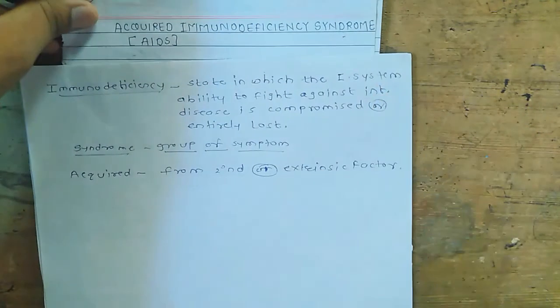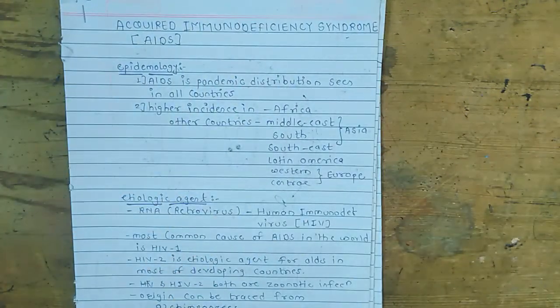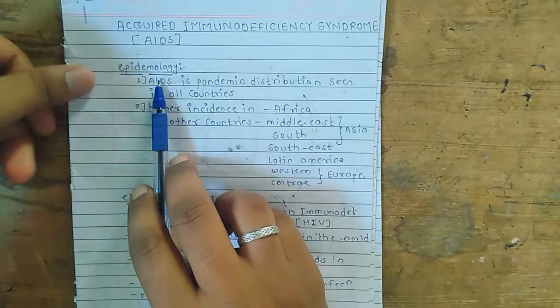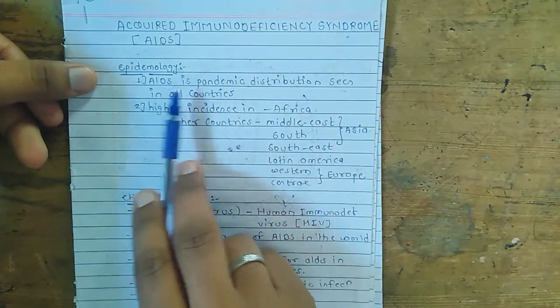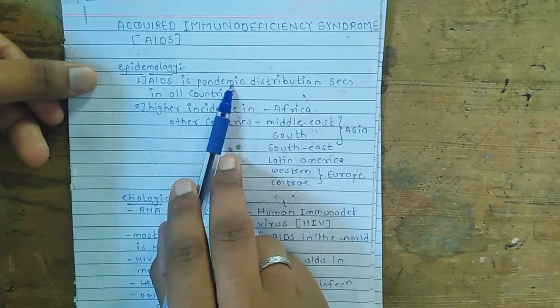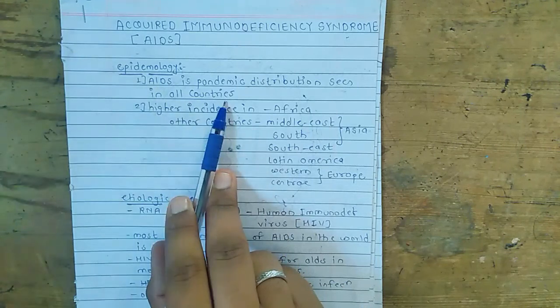Then we go to the Epidemiology. AIDS has a pandemic distribution seen in all countries.